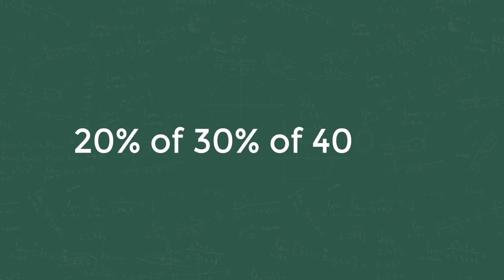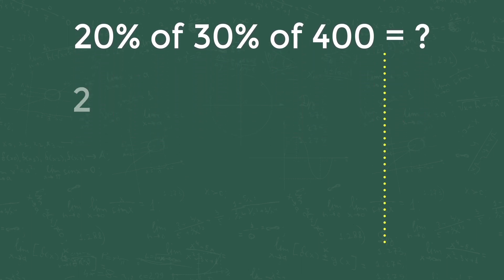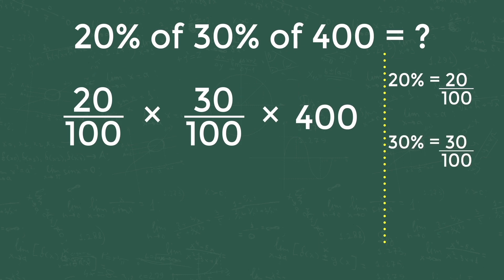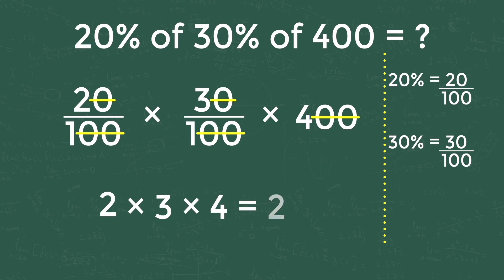Let's see the second problem: 20 percentage of 30 percentage of 400 is how much. 20 percentage is 20 by 100, into 30 percentage which is 30 by 100, into 400. Four zeros in the bottom and top are cancelled, so 2 into 3 into 4 is 24. The answer is 24.